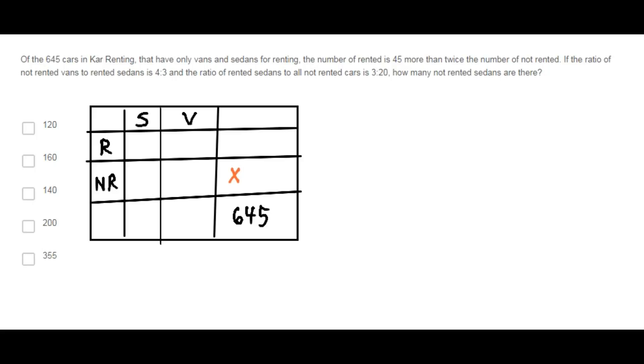Let x be the number of not rented cars. They state the following: The number of rented is 45 more than twice the number of not rented.